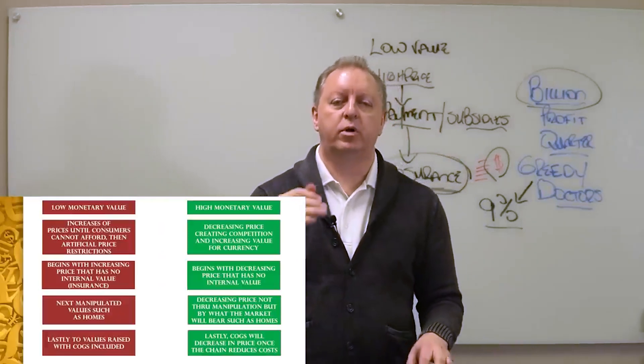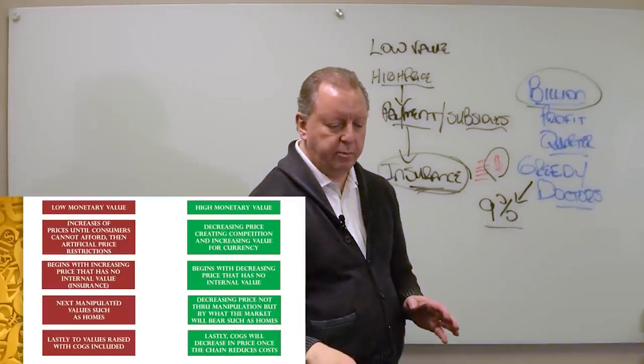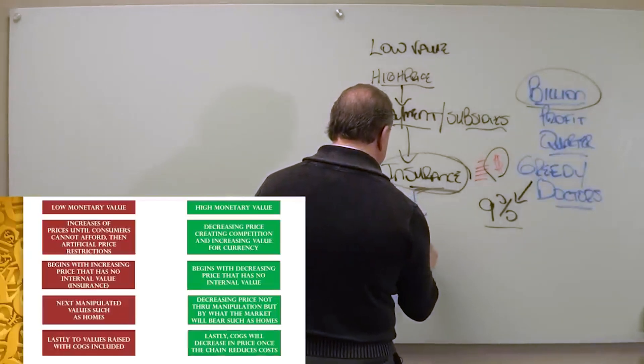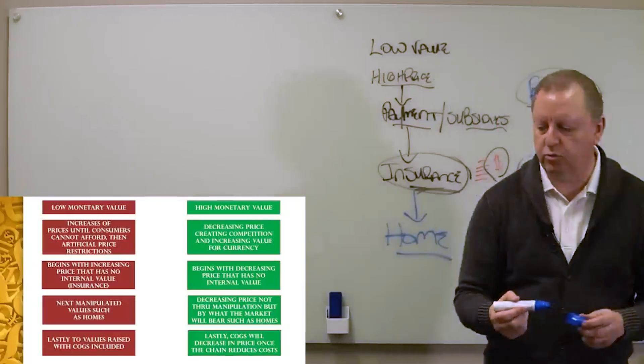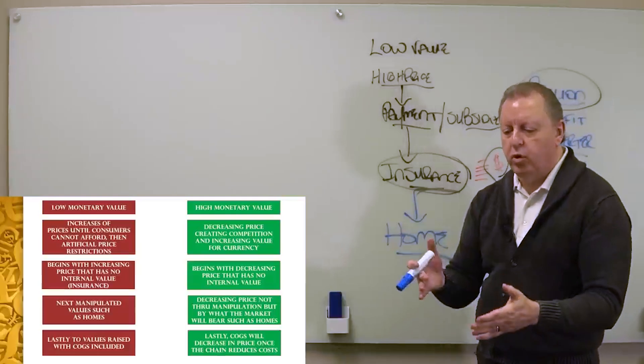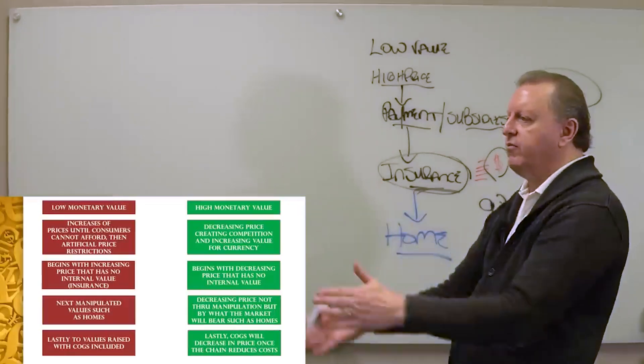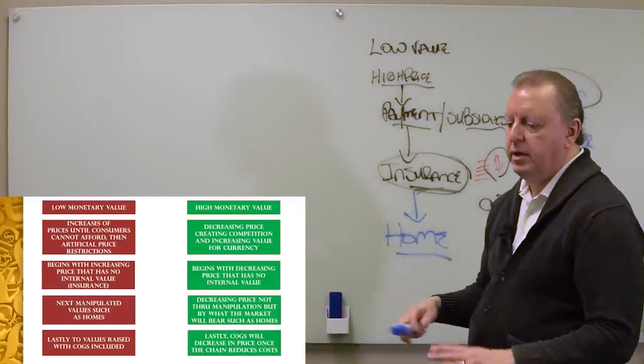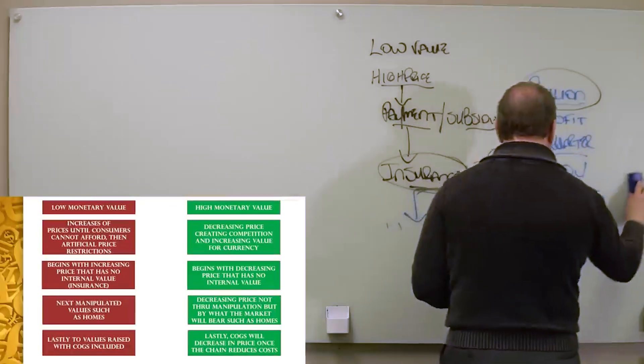The greedy doctors only get nine percent. Yes, who's the problem? The billion dollar insurance companies. You are going to see a massive reduction in no value types of ideas out there. Home values get increased dramatically as well. Everything gets to that point and it becomes unsustainable.